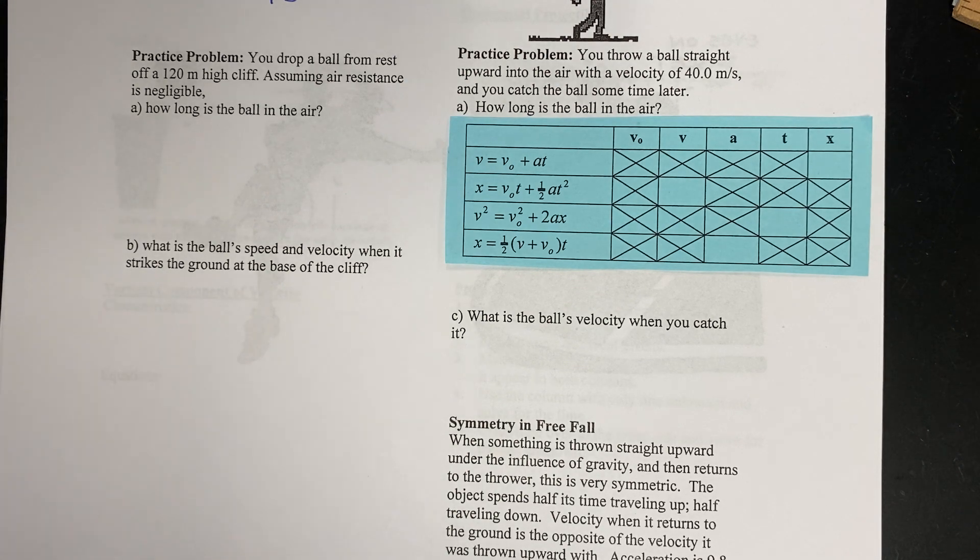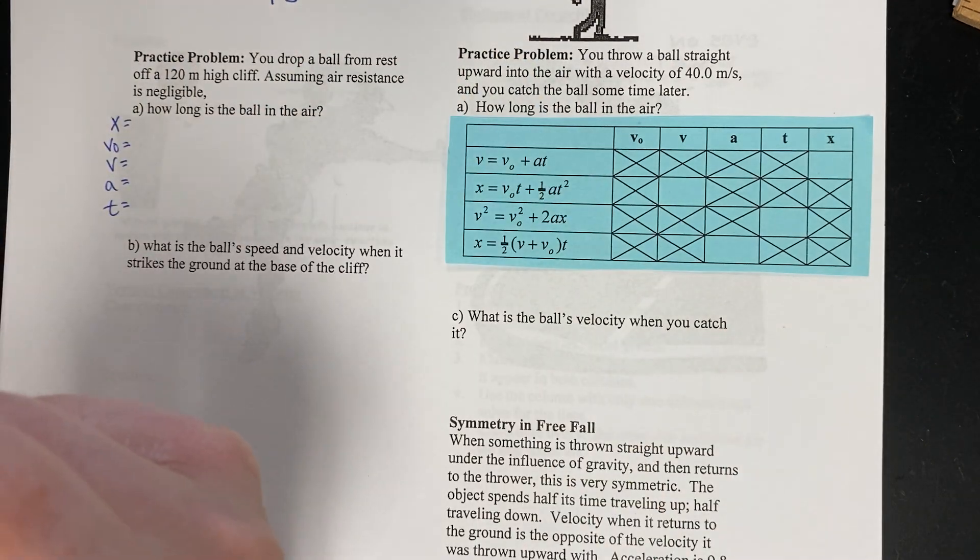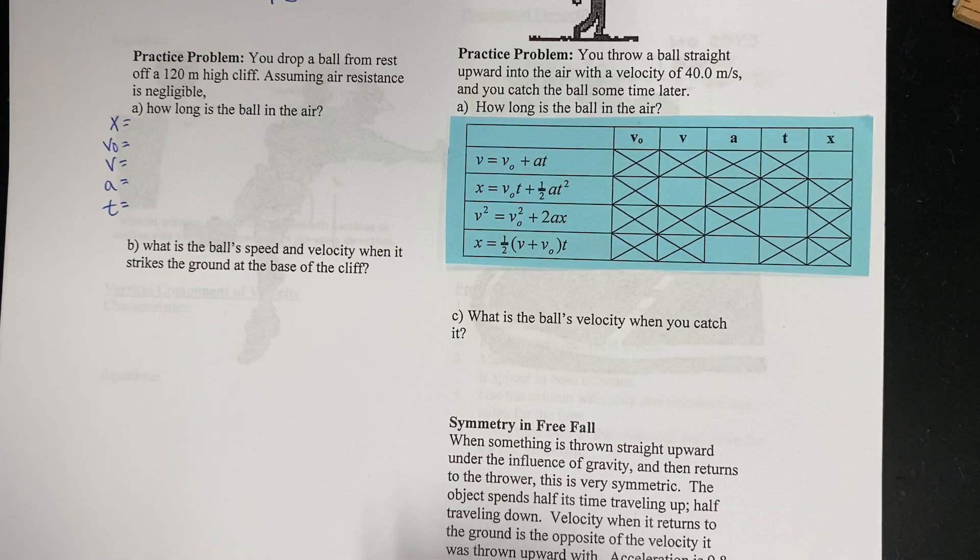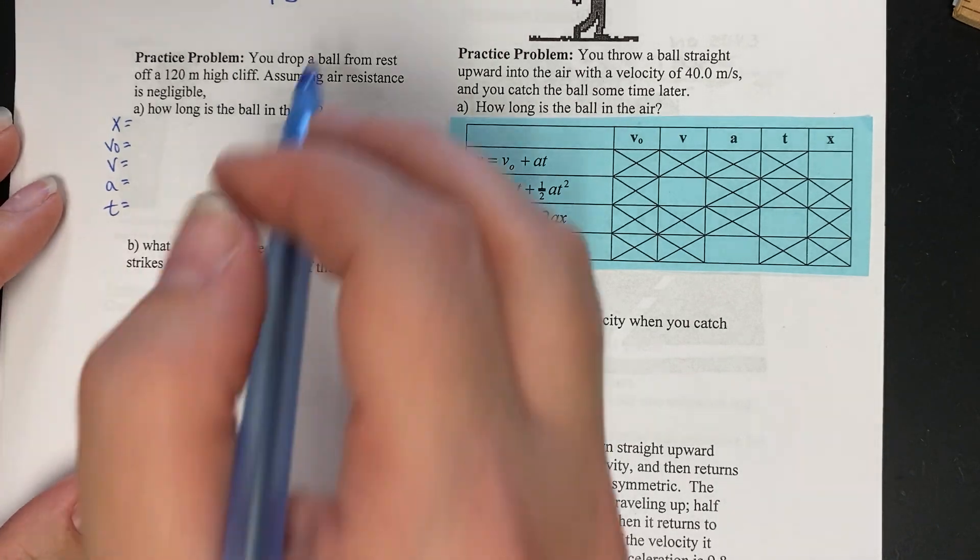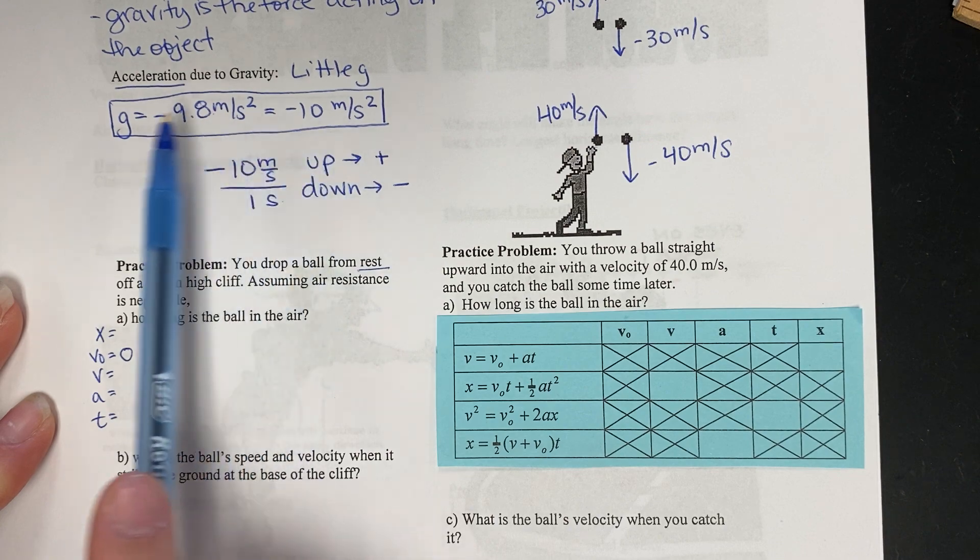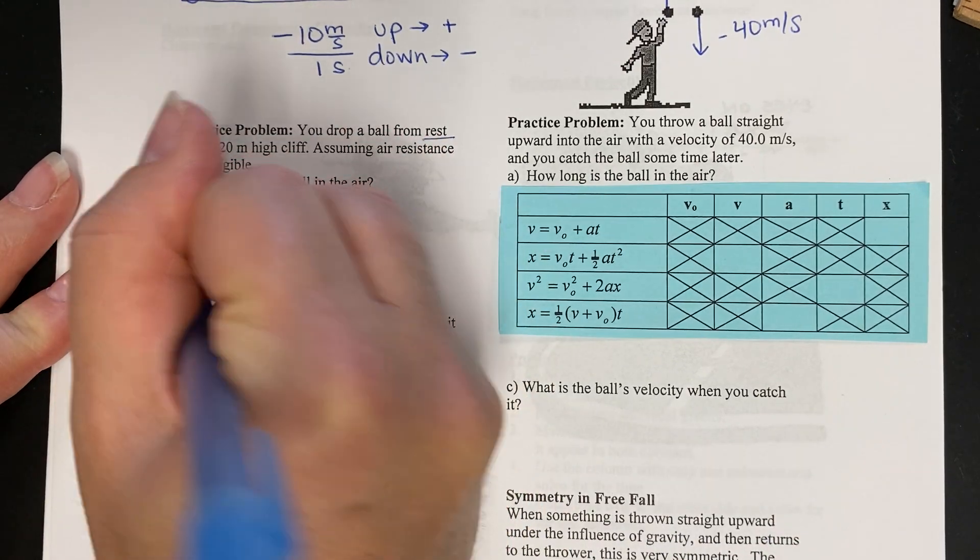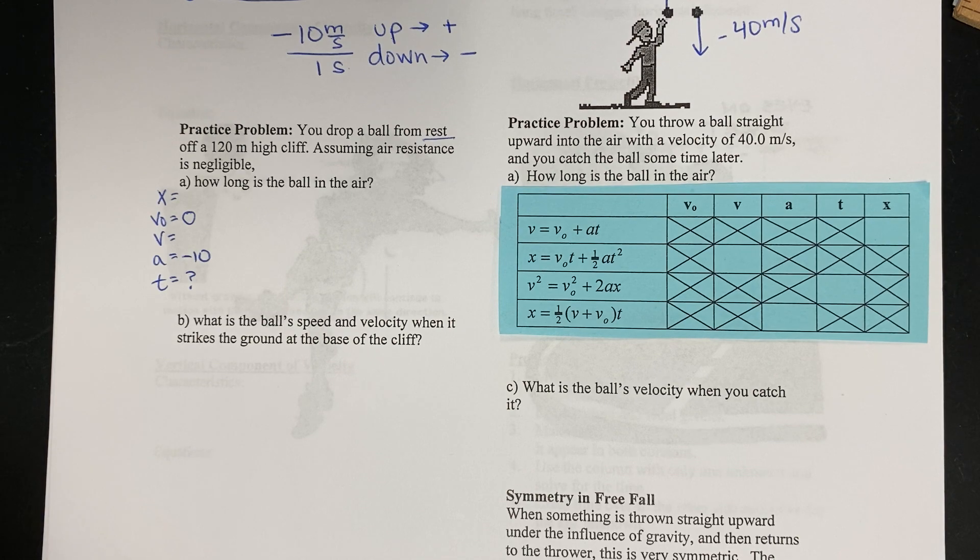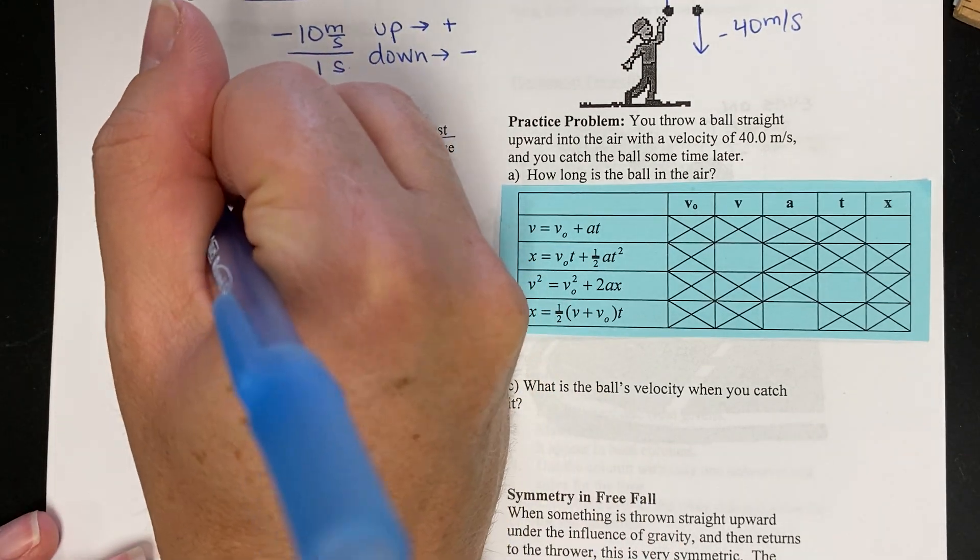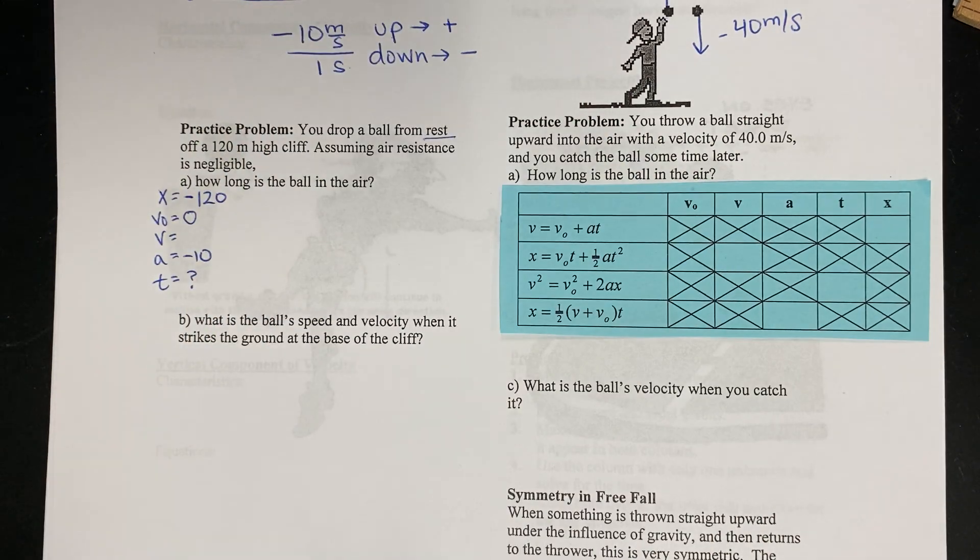So it says, you drop a ball from rest off a 120 meter cliff. Assume air resistance is negligible. How long is the ball in the air? Okay, so I'm going to start out writing X, V naught, V, A and T. So a couple of things. We know that it starts from rest. We know that it's in free fall. So the acceleration due to gravity, in this case, is negative 10. We know that we're looking for how long is the ball in the air. And we know that the cliff is 120 meters tall. But a couple of things. Since we're going down, I'm going to add a negative in here.